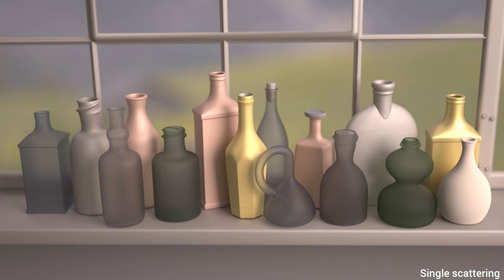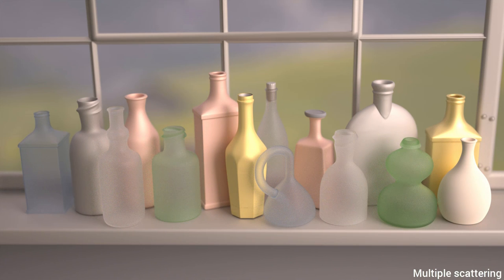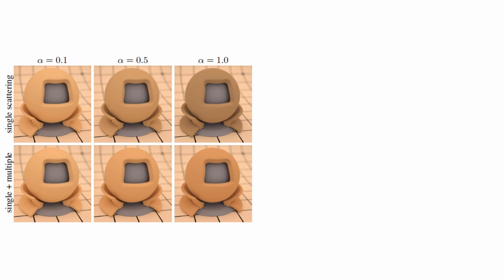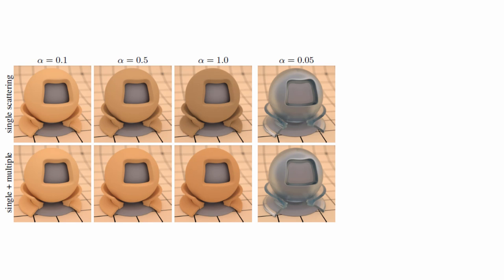Without multiple scattering, rough transmittance appears unnatural, which is hard to compensate for by tuning parameters. With our multiple scattering model, we simulate the expected appearance of rough glass and metals without tuning any parameters. Our model is robust and behaves as expected even with high roughness values.